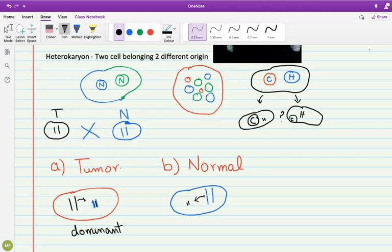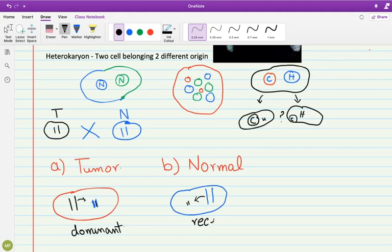Whatever is lacking inside a tumor cell is actually being counterbalanced by a normal cell. This is attributed to a recessive form. There are two things wrong inside a tumor cell which are being repaired or substituted by normal cell proteins.